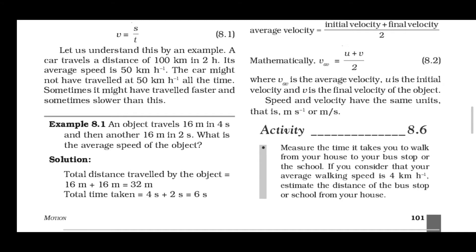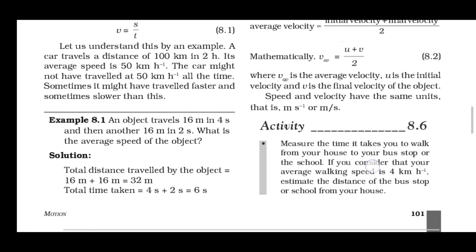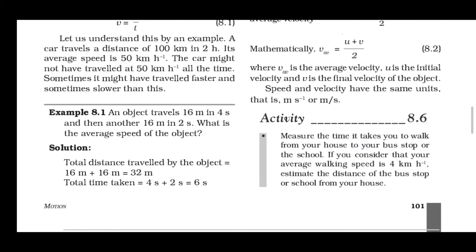Speed and velocity have the same units — units same ही रहेगी speed और velocity की। To differentiate between speed and velocity: speed एक scalar quantity है, velocity vector quantity है। Speed के लिए सिर्फ magnitude चाहिए होता है, velocity में magnitude के साथ साथ direction भी include करनी होती है।